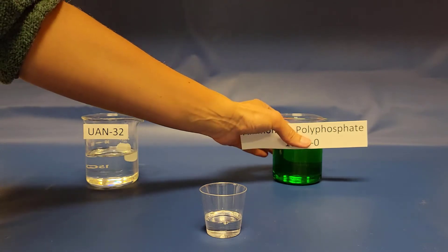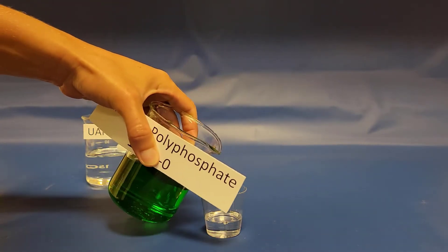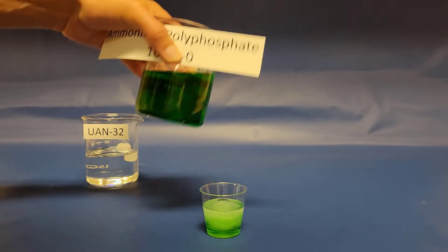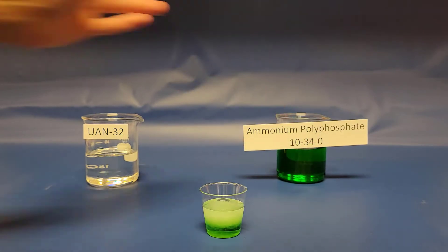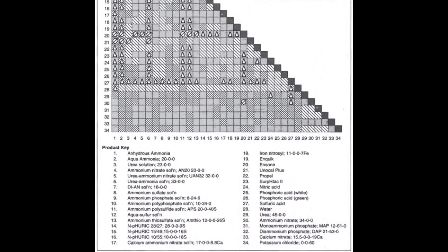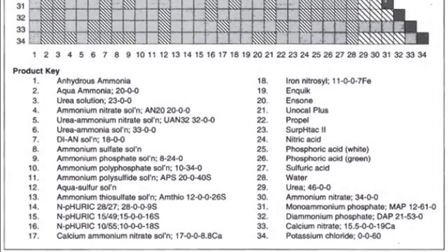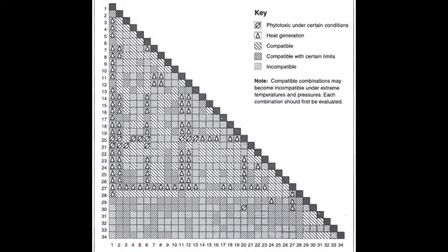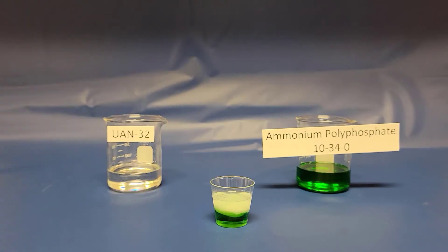After about 30 minutes we'll inspect each of the fertilizer mixtures to see what they look like. Before we look at the result of our mixture, let's look at how it appears on the chart in the book. So we mixed UAN32, which is product number 5, with ammonium polyphosphate, which is product number 10. If we look here on the chart, product number 5 and number 10 when mixed together says it's compatible. Let's compare the table with what we actually got.